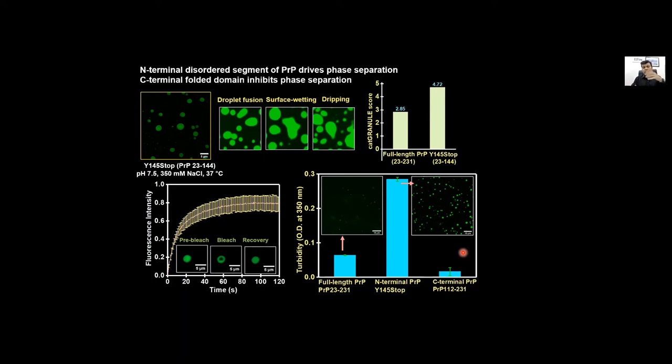These results indicated that the N-terminal part is the major driver of phase separation of this protein. Therefore this amber stop codon mutant phase separates into highly dynamic liquid droplets.